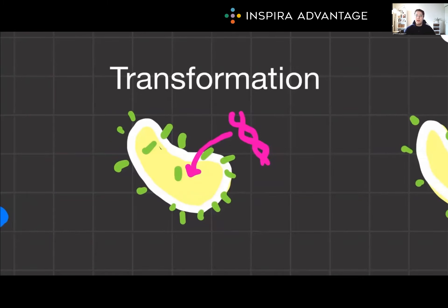How about transformation? This is bacteria's favorite way. Some bacteria can uptake foreign DNA from their surroundings. Once incorporated, the DNA can replace a segment of the bacterial chromosome, creating a new recombinant bacterium. It's nature's way of letting bacteria sample genes from their environment.